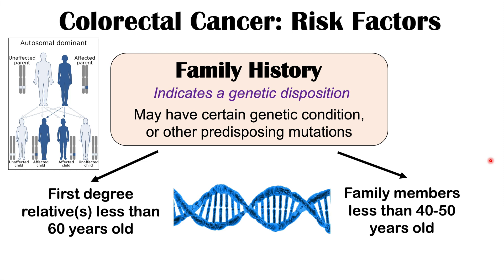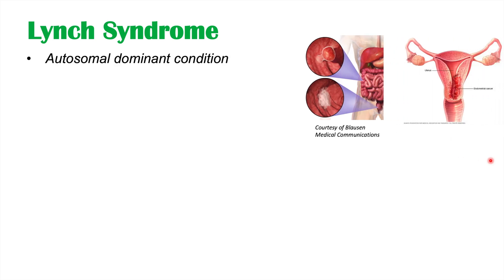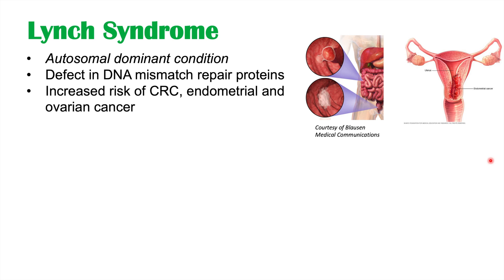If you see a first degree relative with colorectal cancer under age 60, or second degree relatives under 40 to 50, that may indicate one of the following genetic conditions. Lynch syndrome is a familial cancer syndrome — an autosomal dominant condition due to a defect in DNA mismatch repair proteins. It increases the risk of colorectal cancer as well as endometrial, ovarian, and other cancers. The age of onset with Lynch syndrome is estimated to be 44 to 61.